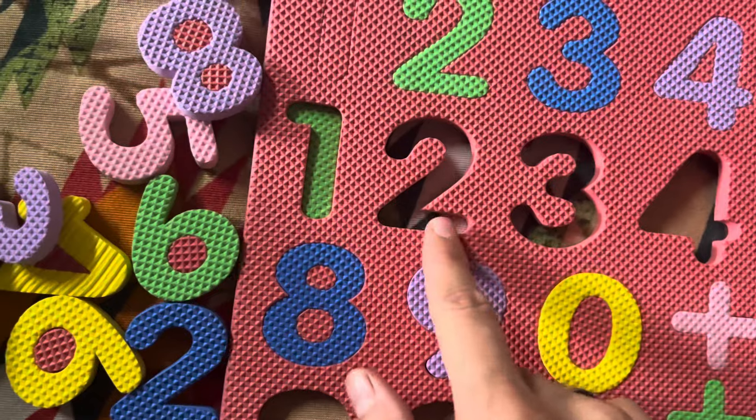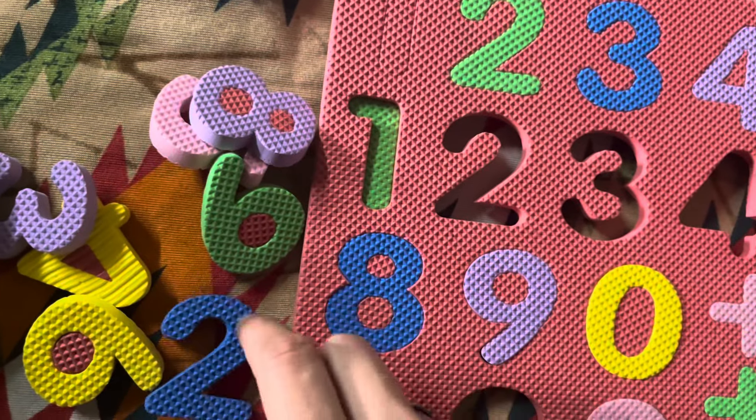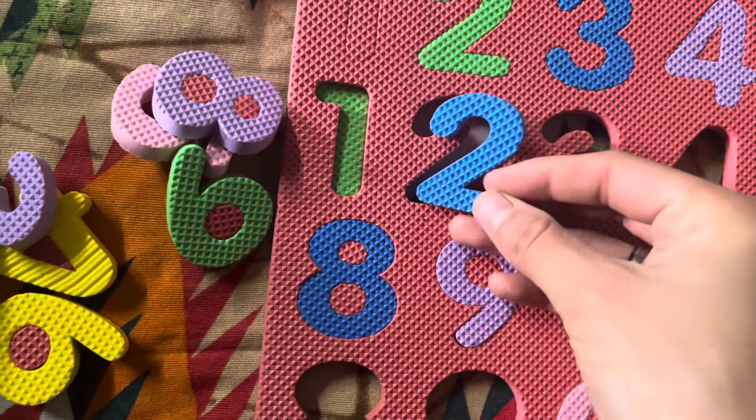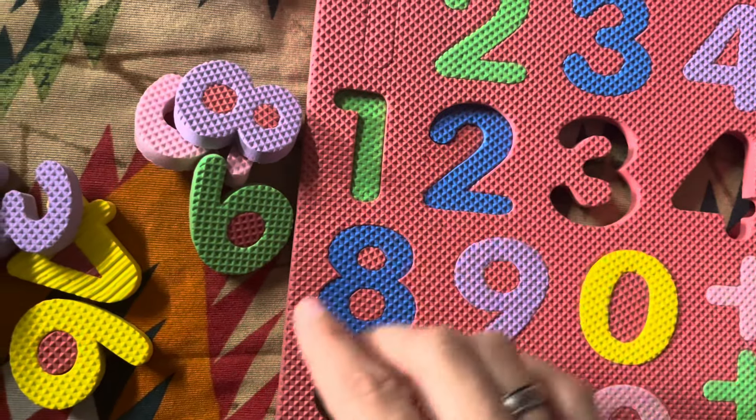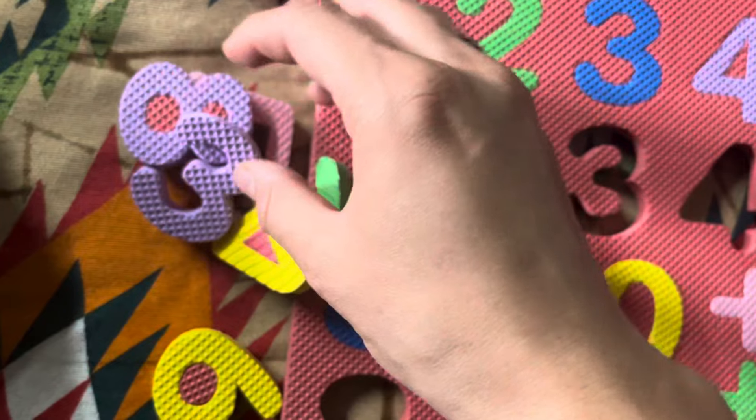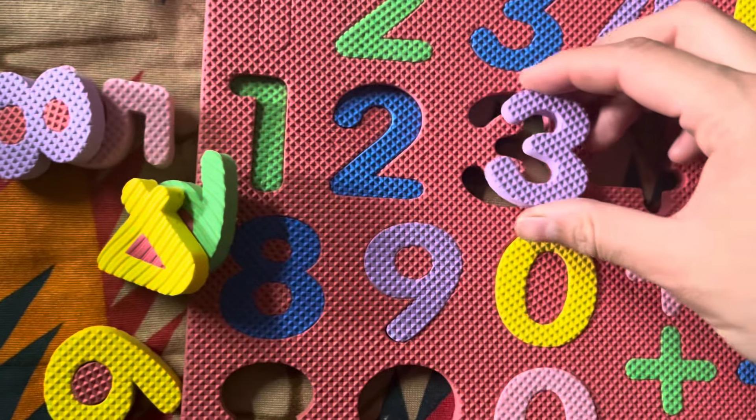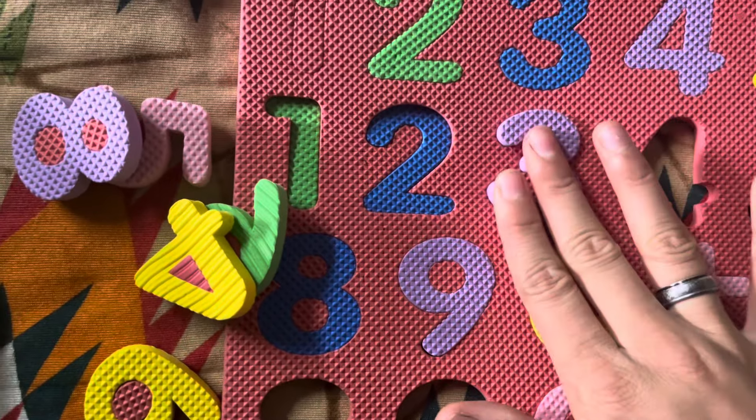Then the next number is number 2. Find out where is number 2. Here, number 2. Then number 3. Where is number 3? Here is number 3. We will put it here into the space given.